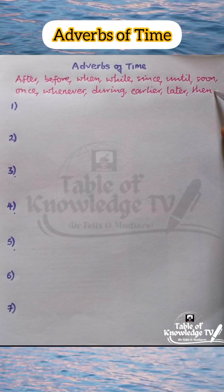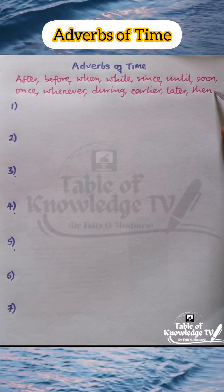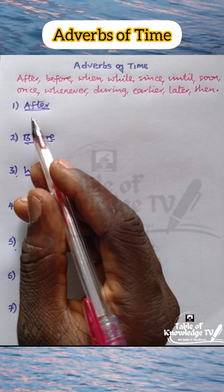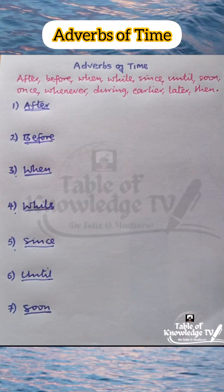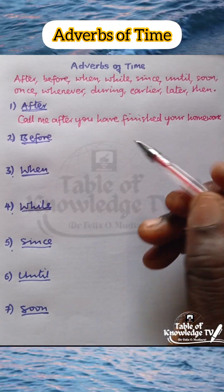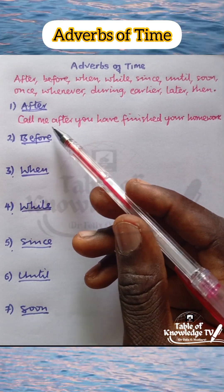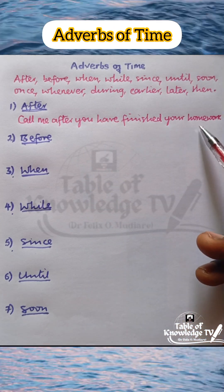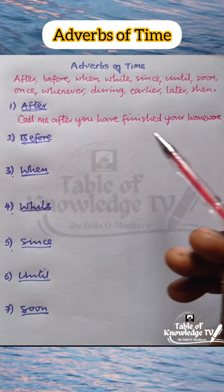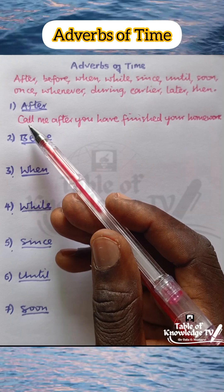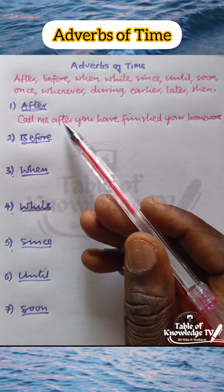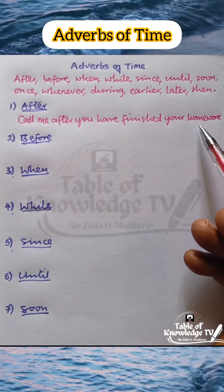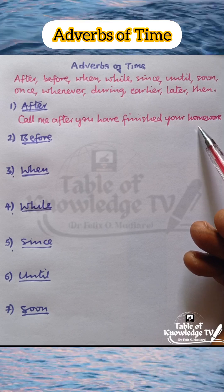Now, let us make sentences with some of these adverbs of time. Number one: after. Example sentence — Call me after you have finished your homework. When should the call be made? After you have finished your homework. 'After' is an adverb of time.